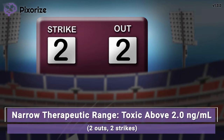Generally, a Digoxin level will be measured, and if this number exceeds 2, you should alert the provider. Remember: above 2 is bad, both in this baseball game and with Digoxin.